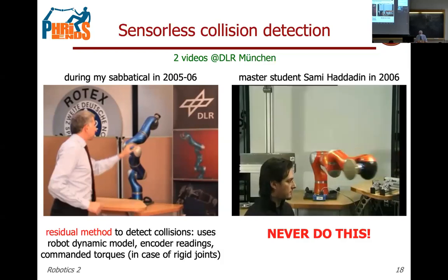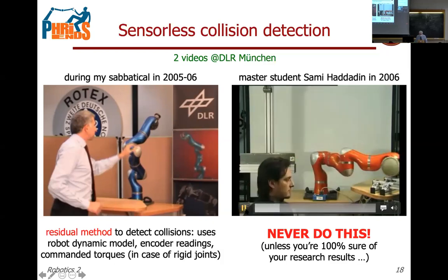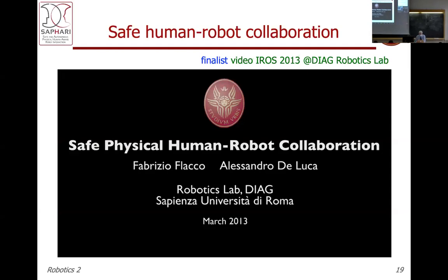The student tried the collision-stopping capability on himself — which is something you should never do unless you are 100% sure of your research. The robot would have continued a full rotation but recognized the contact and stopped suddenly. That smart student is now leading one of the big robotics centers in Europe — the Munich School of Robotics and Machine Intelligence.